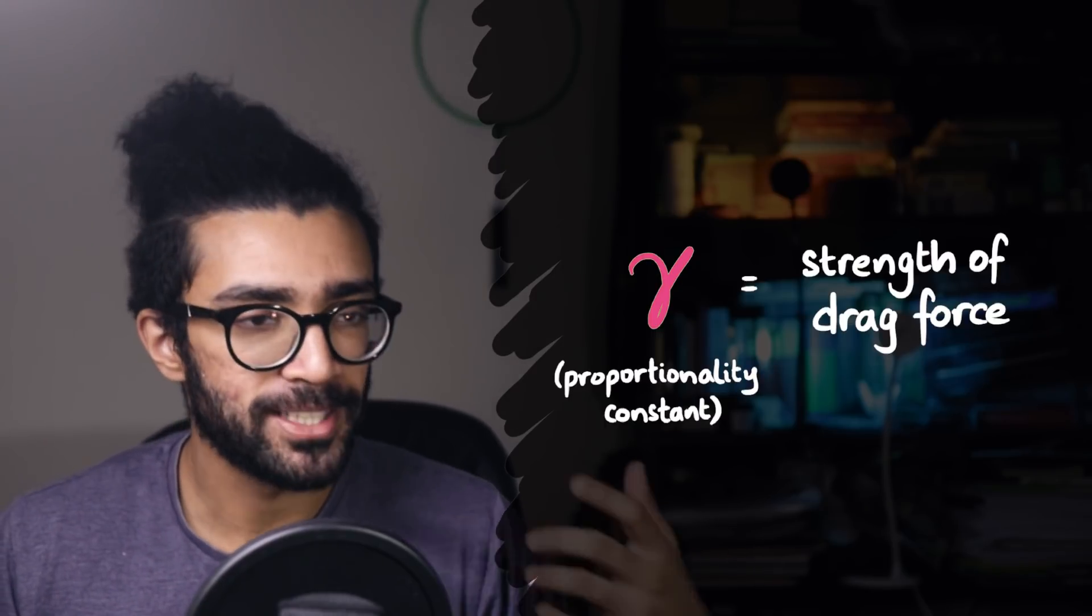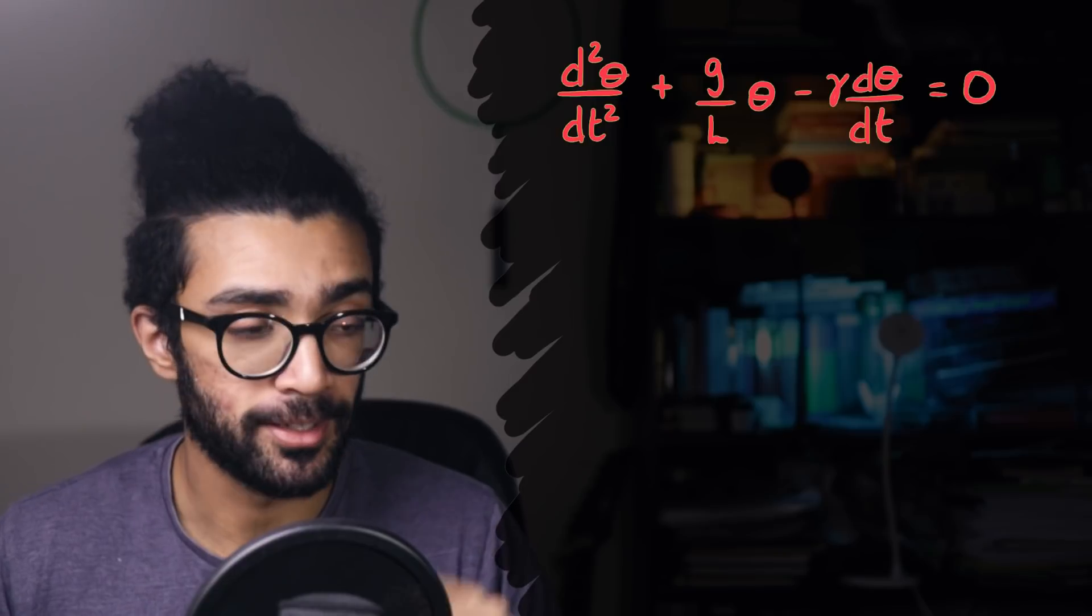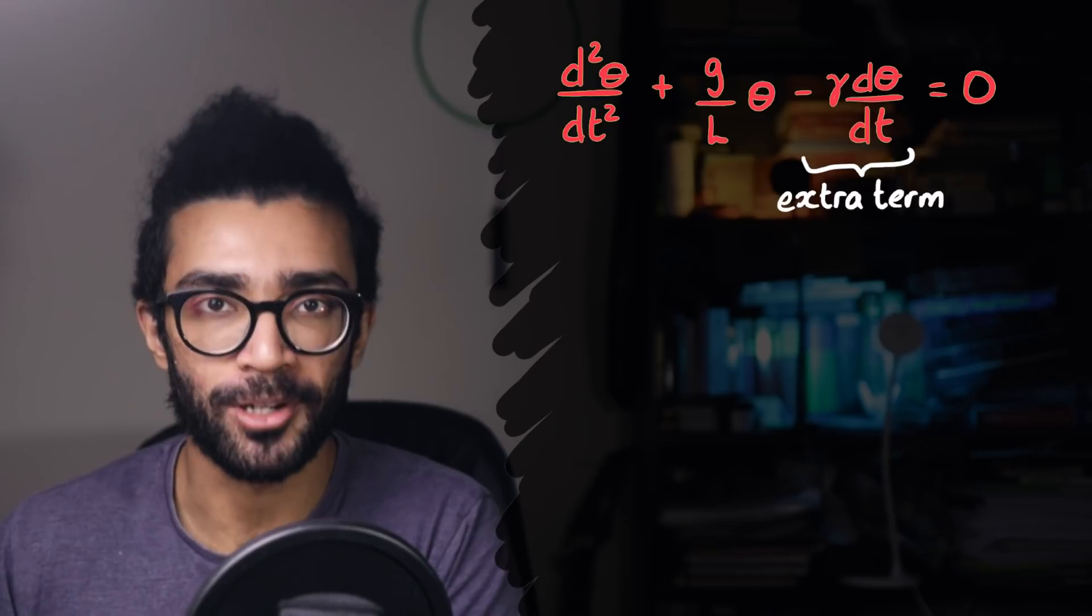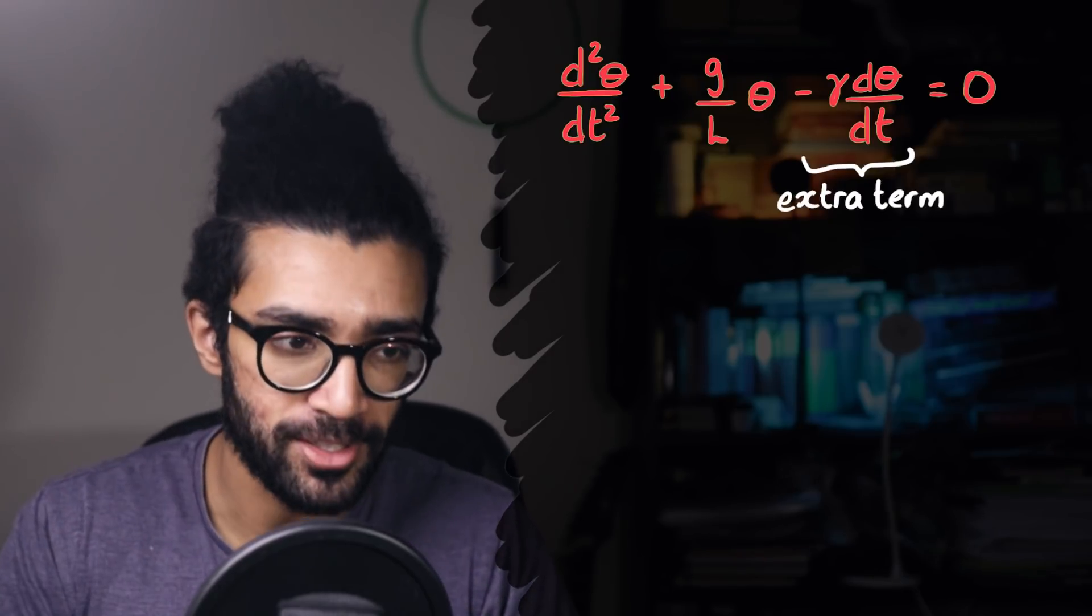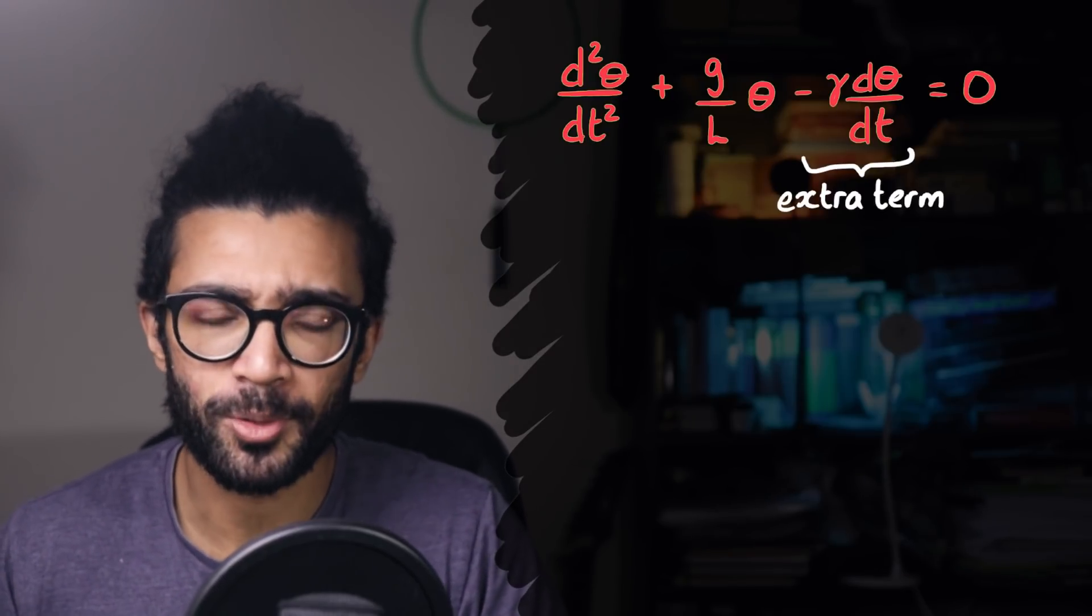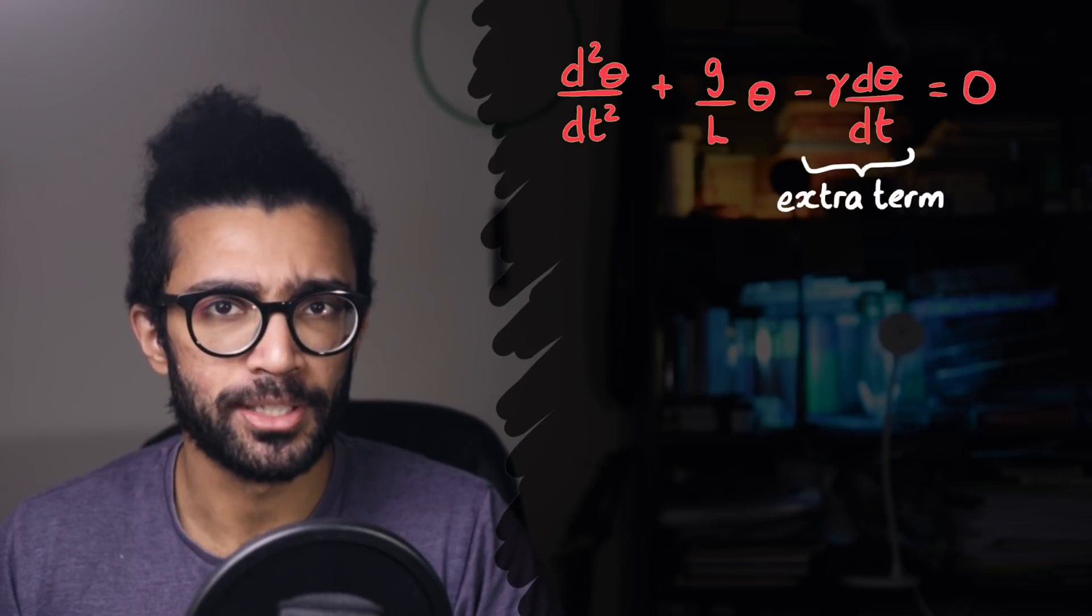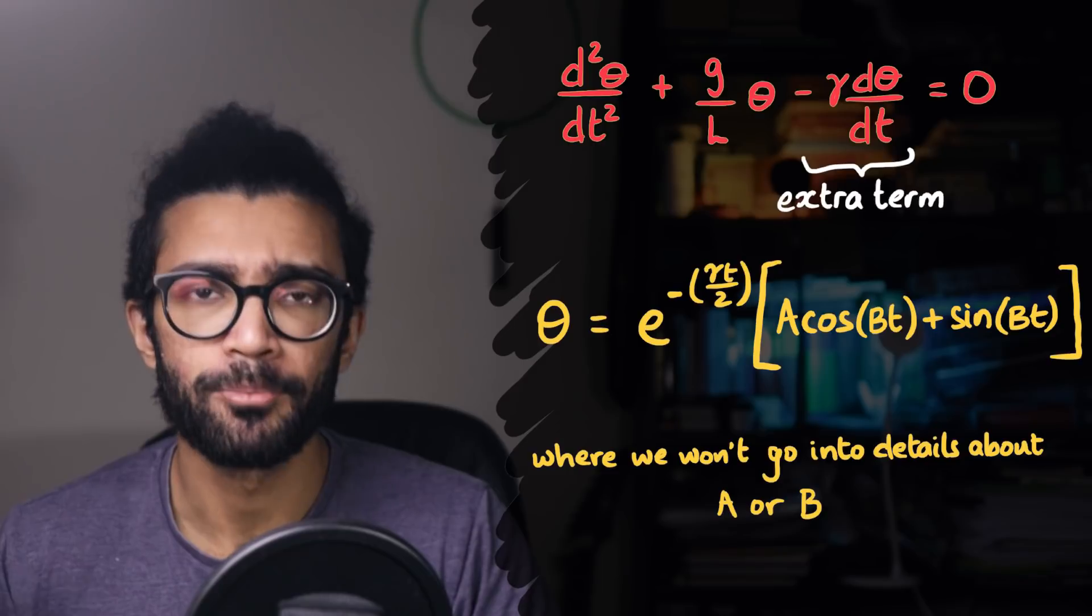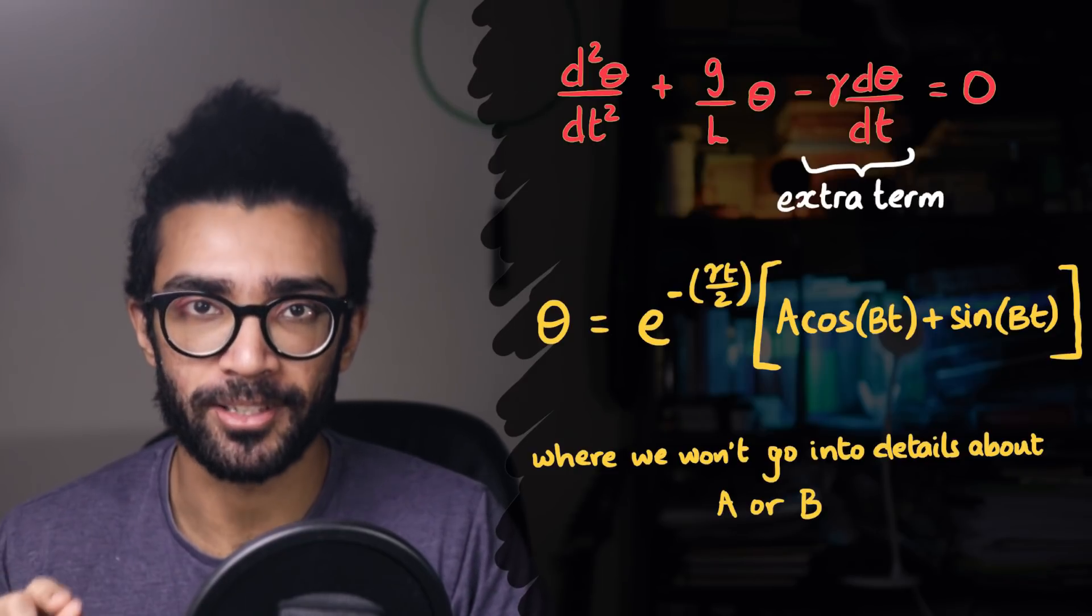And so we now have a different equation of motion, this time accounting for not only the gravitational force, but also the drag force due to the air particles. And we can try and solve this equation as well, slightly more involved than the previous one, and we find that the solution looks like this. A lot of maths, a lot of complexity, but there's a couple of things I want us to look at specifically.